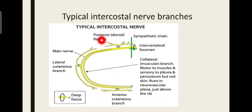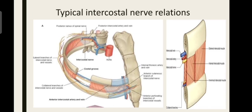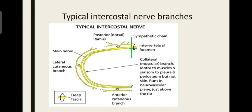Next, there will be emergence of another branch — the collateral branch — which goes along the same course as the intercostal nerve but lies below it. This collateral branch arises near the neck of the thoracocostal nerve and runs along with that same branch but in the lower aspect.